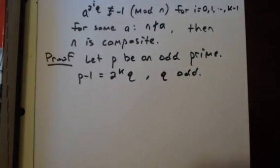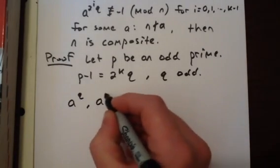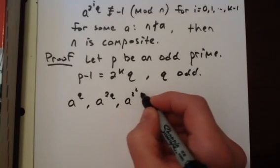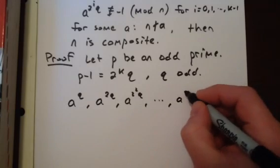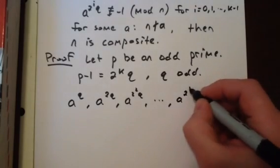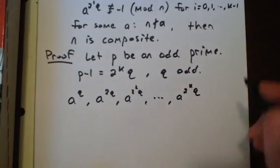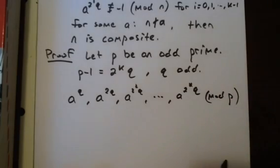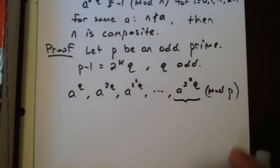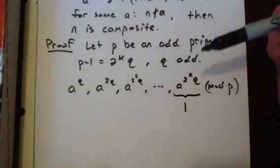Now the trick here is to consider this list of numbers: a to the q, a to the 2q, a to the 2 squared q, all the way up to a to the 2 to the k q. Now we're going to consider all of these mod p. Now this here is congruent to 1, because 2 to the k times q is p minus 1.